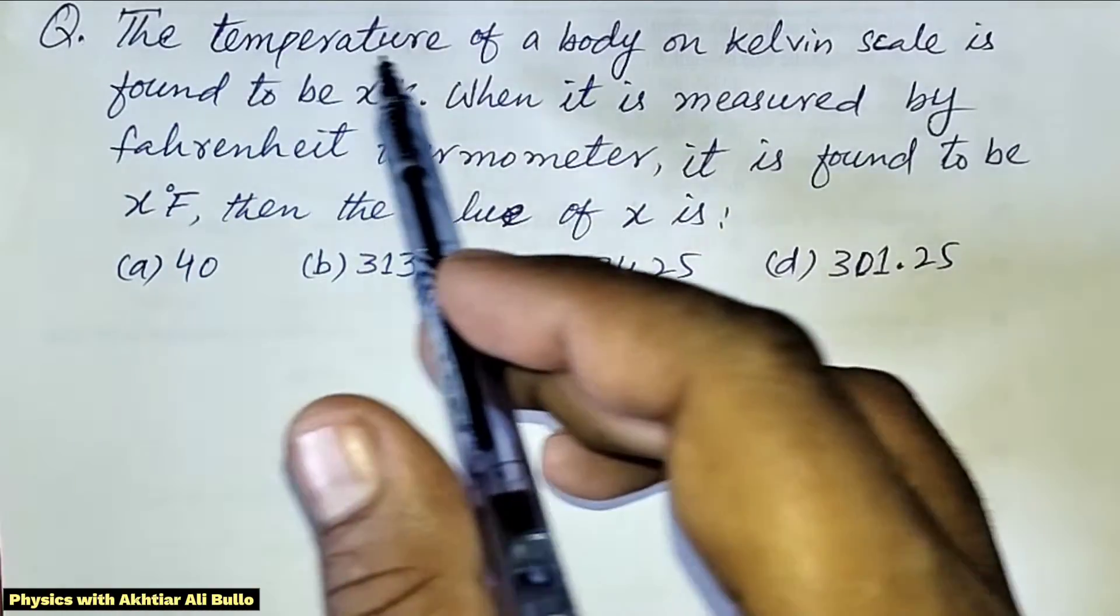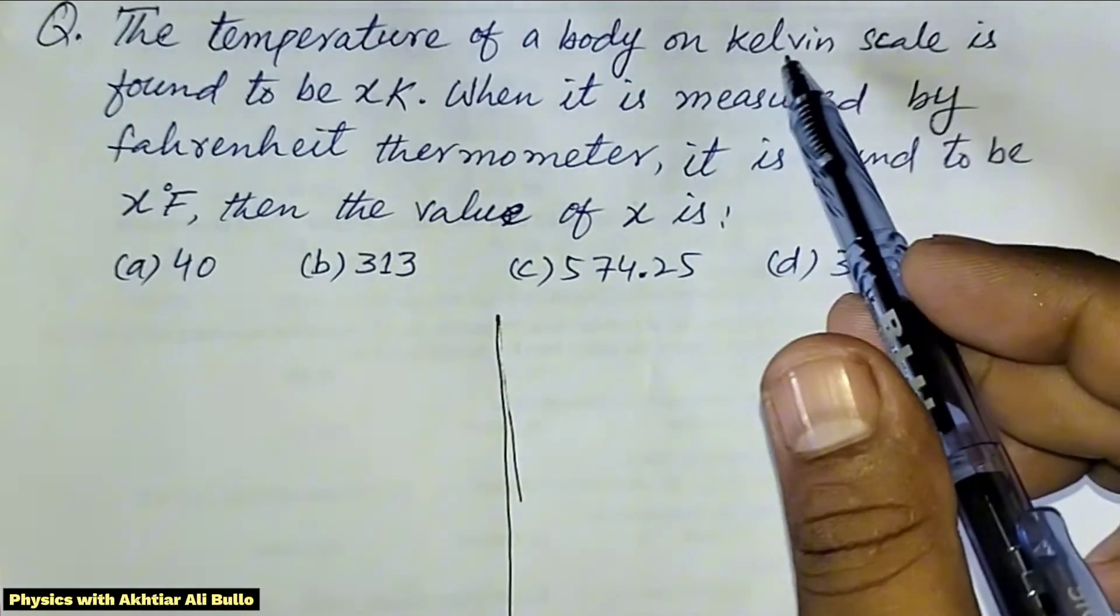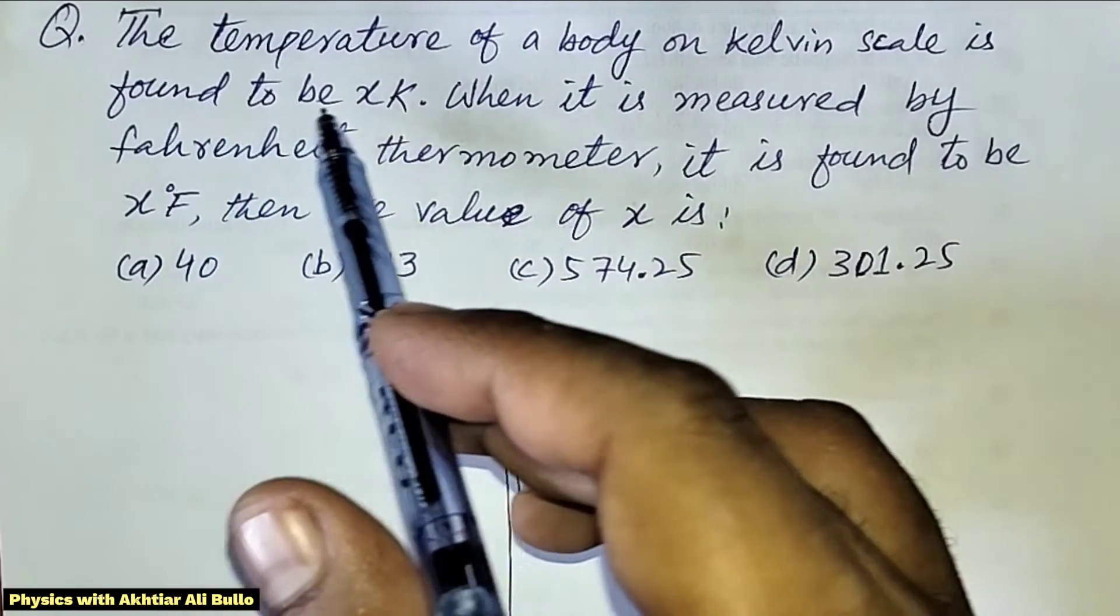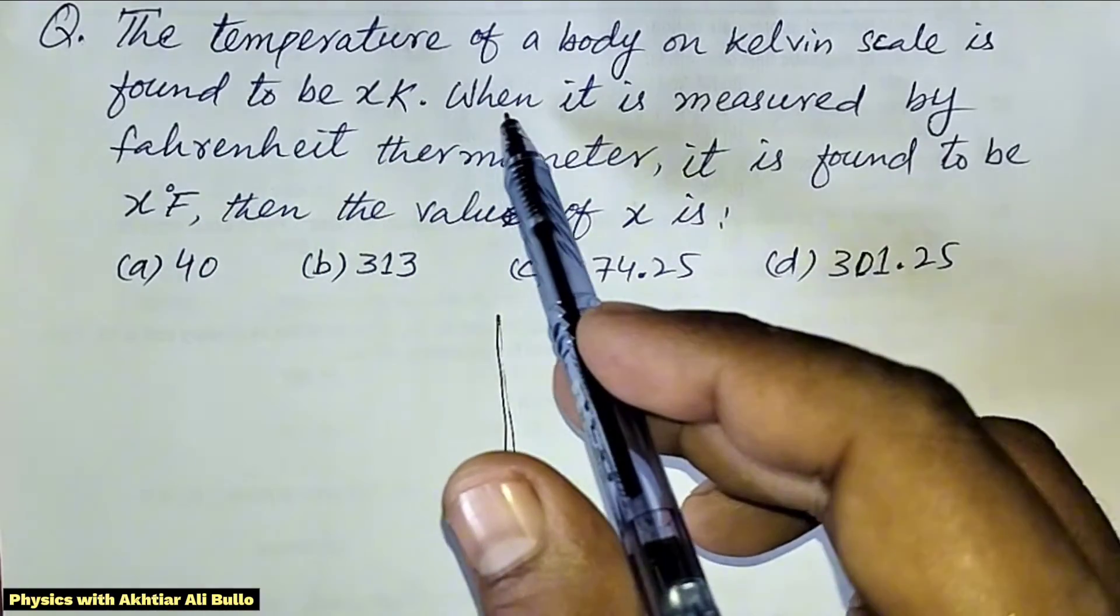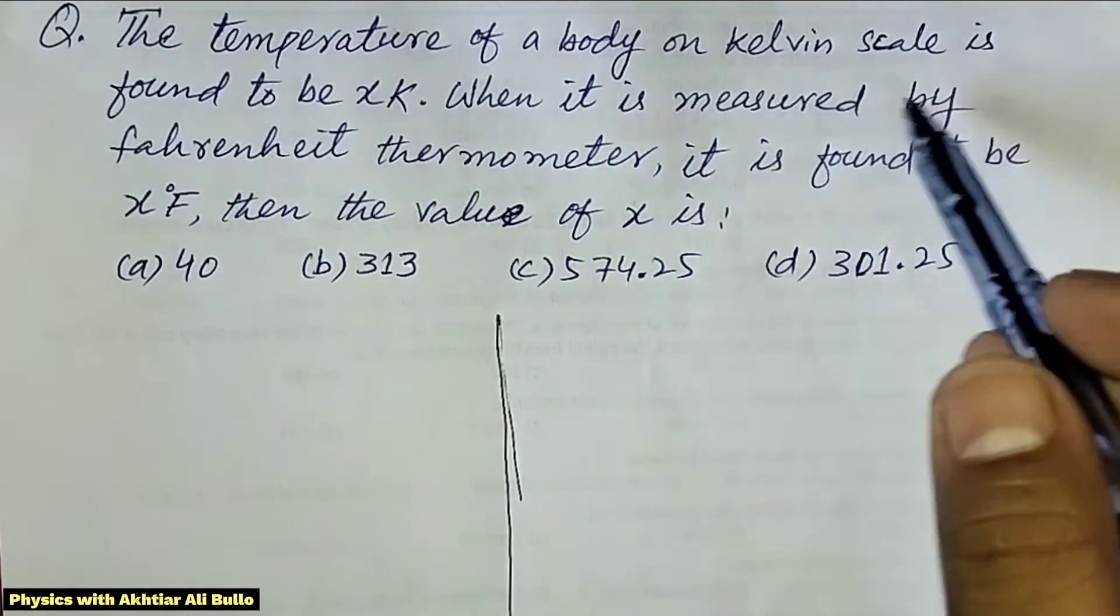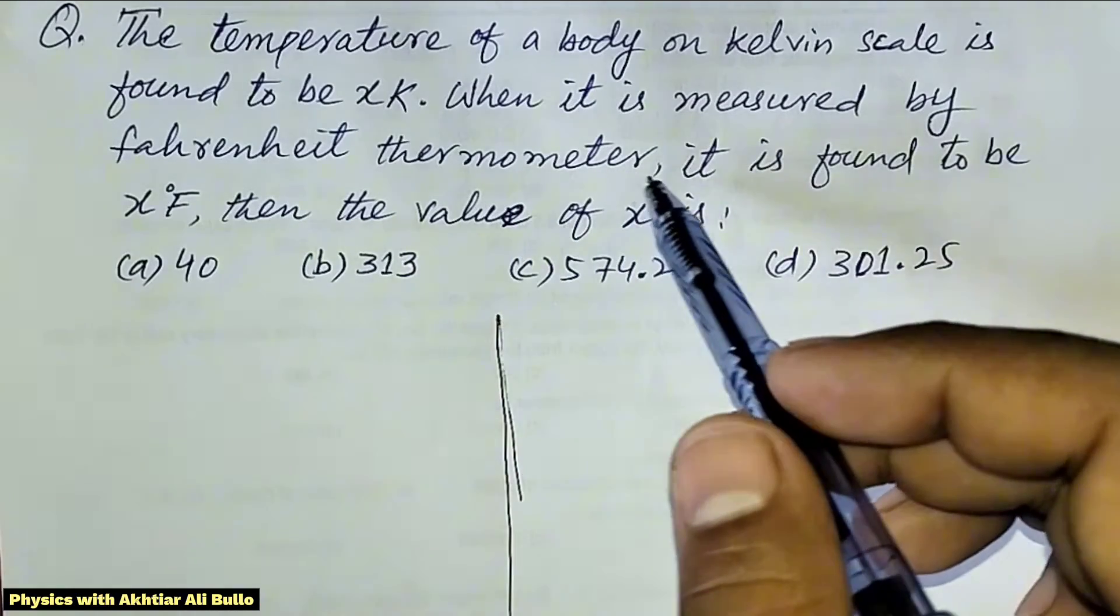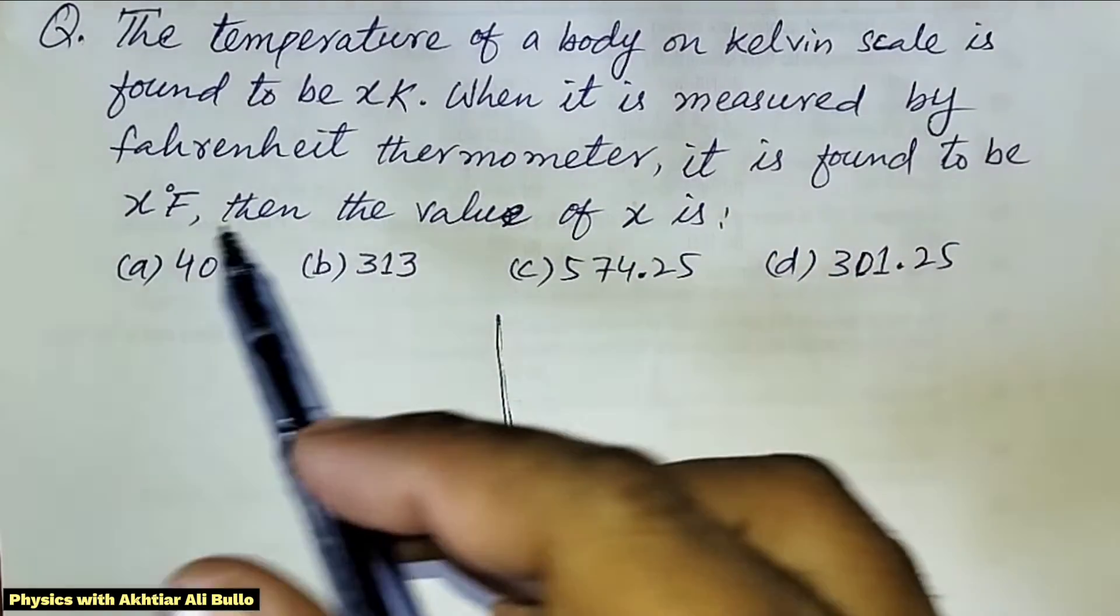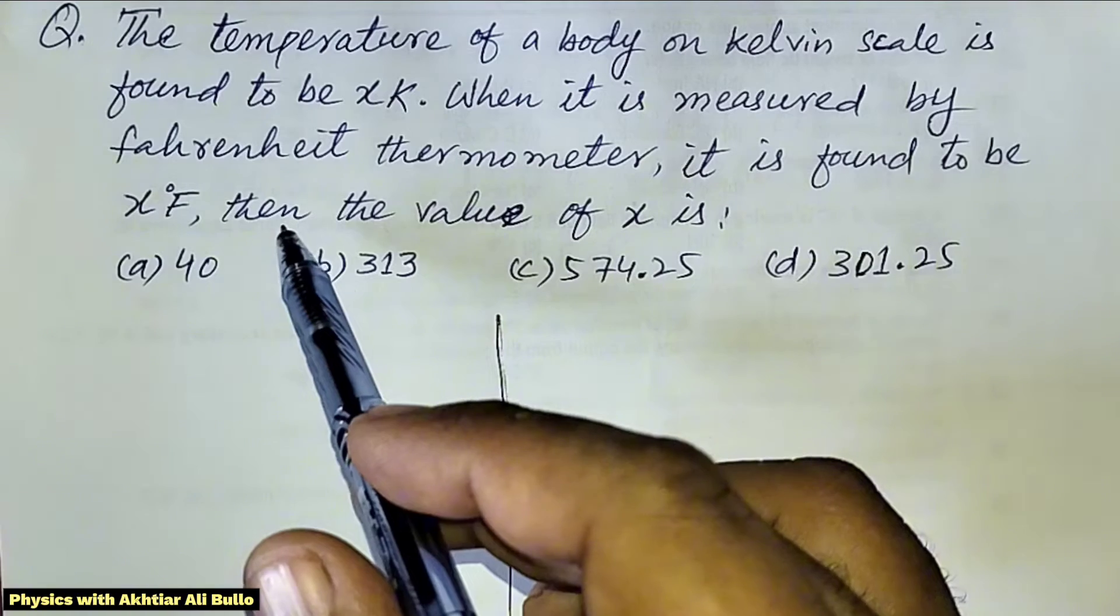The question is: the temperature of a body on Kelvin scale is found to be x K. When it is measured by a Fahrenheit thermometer, it is found to be x°F.